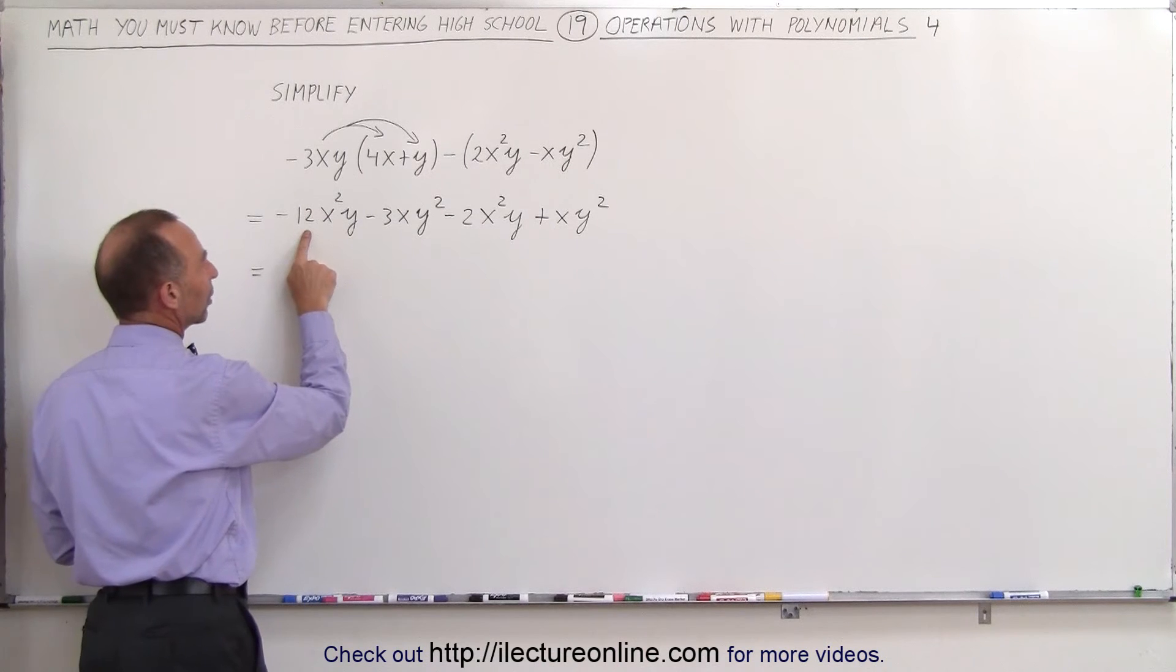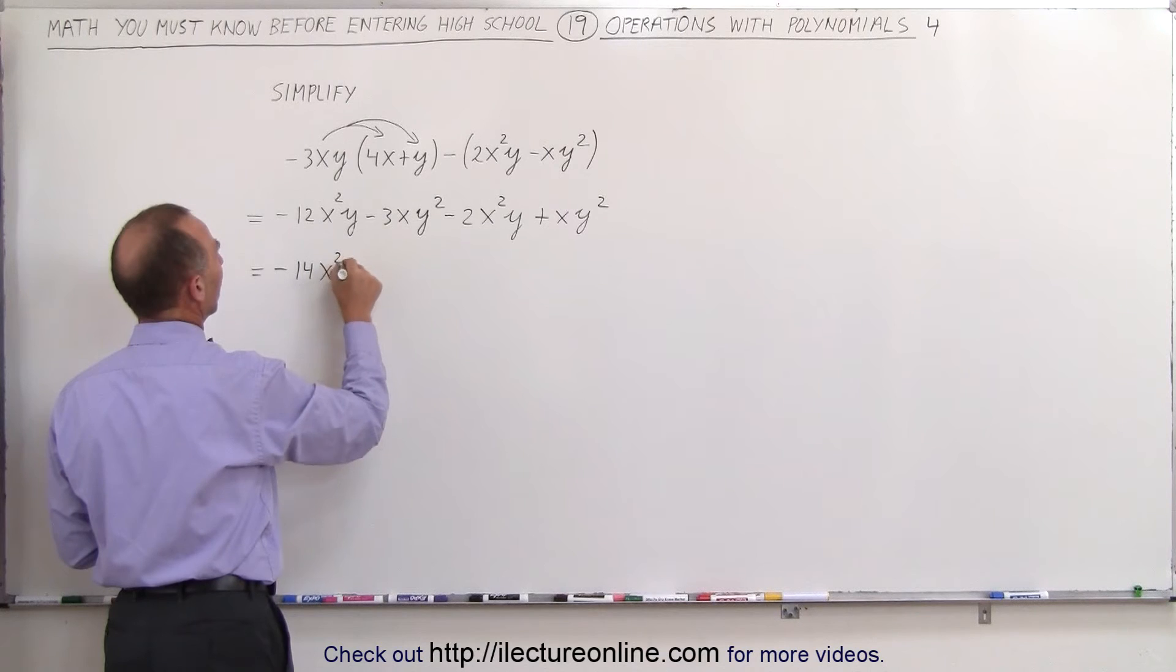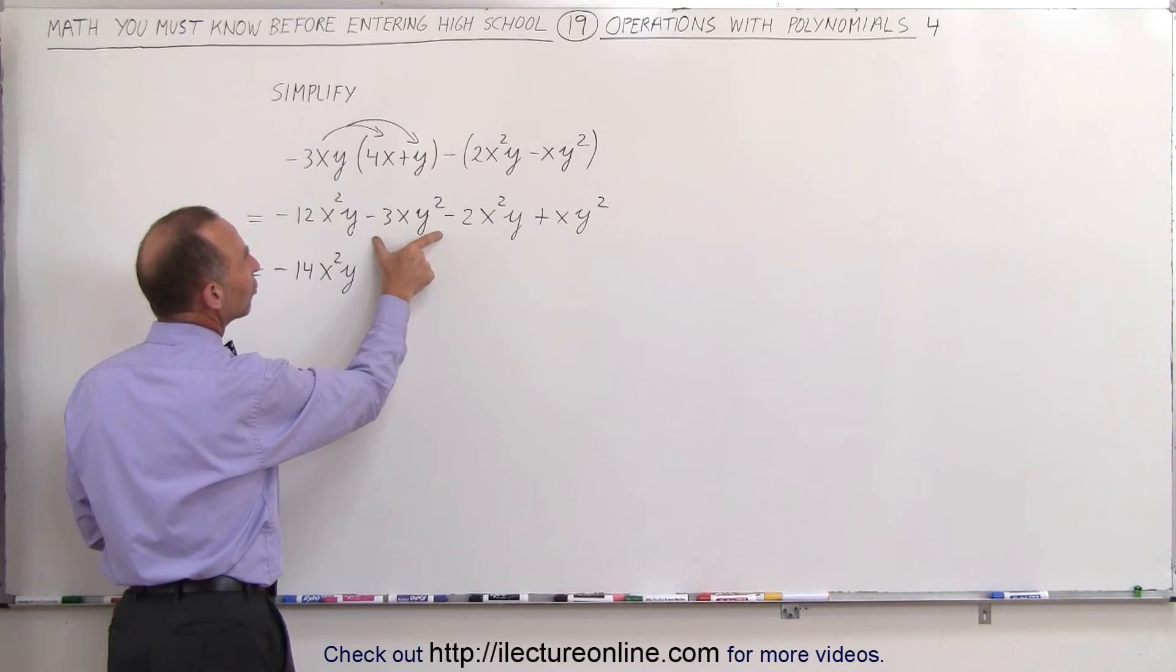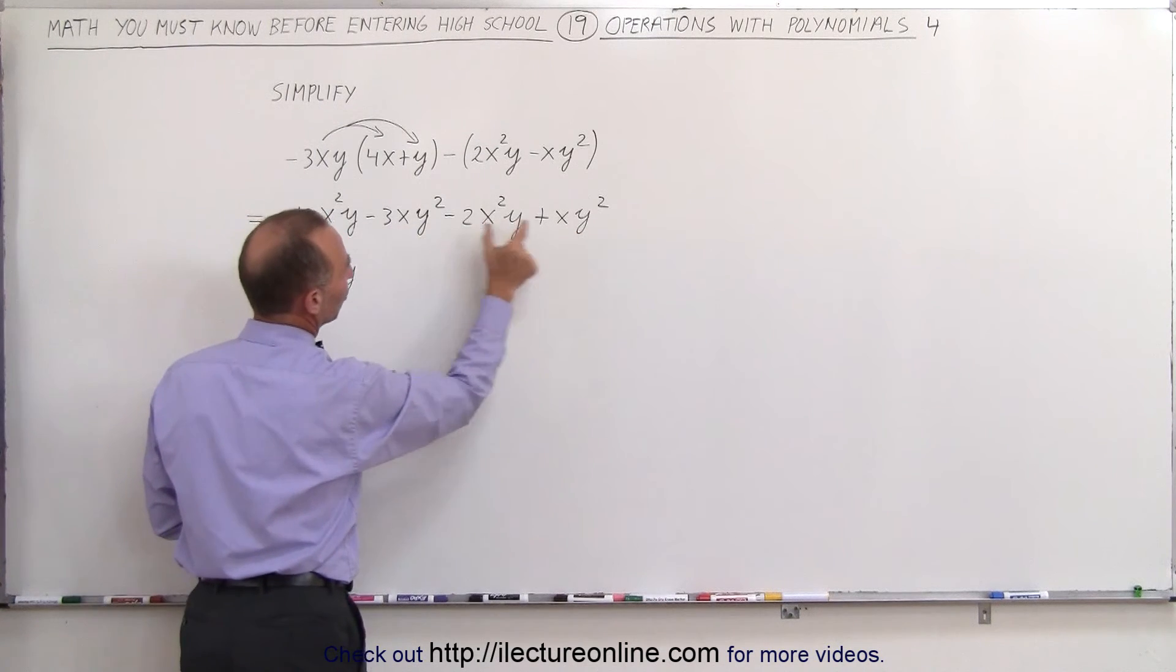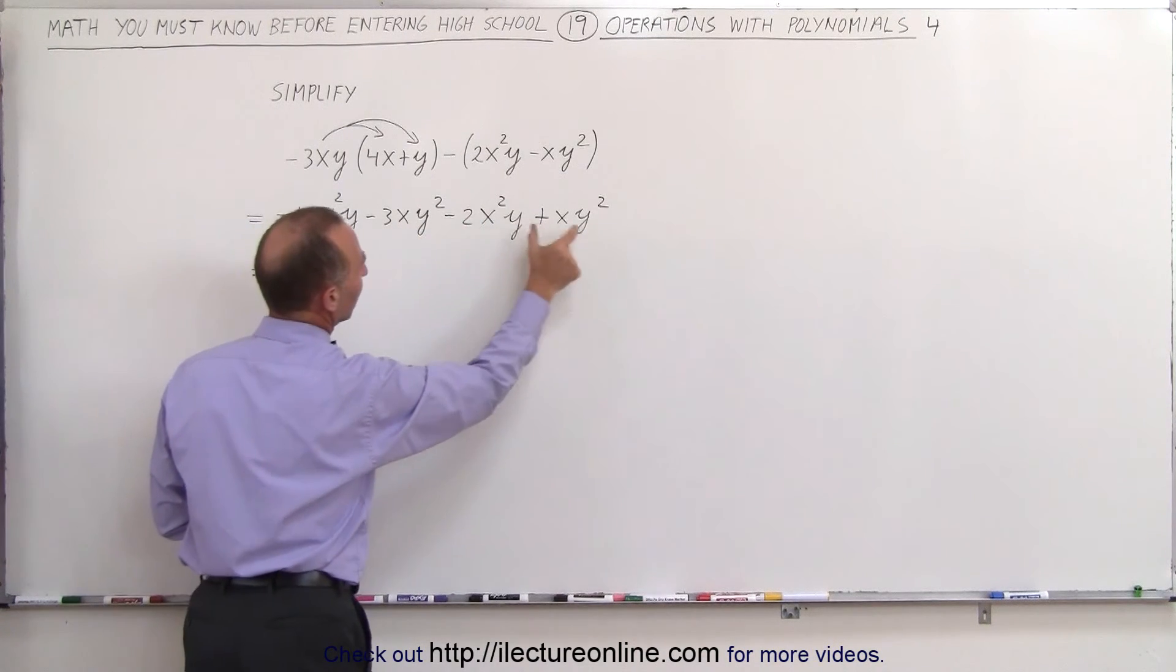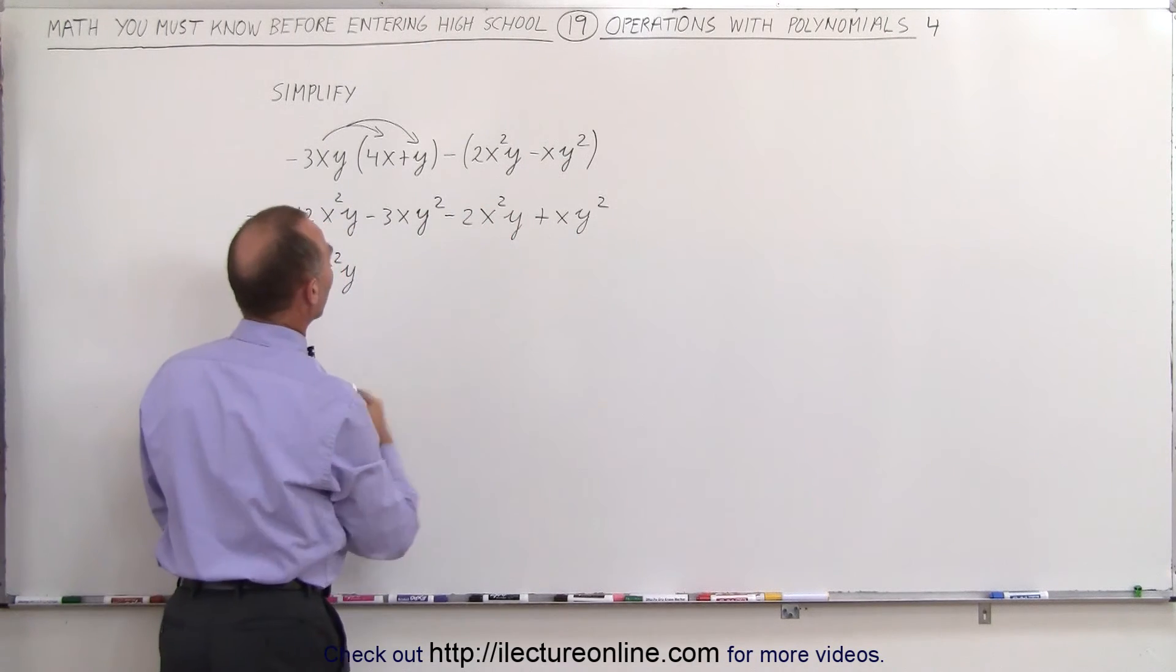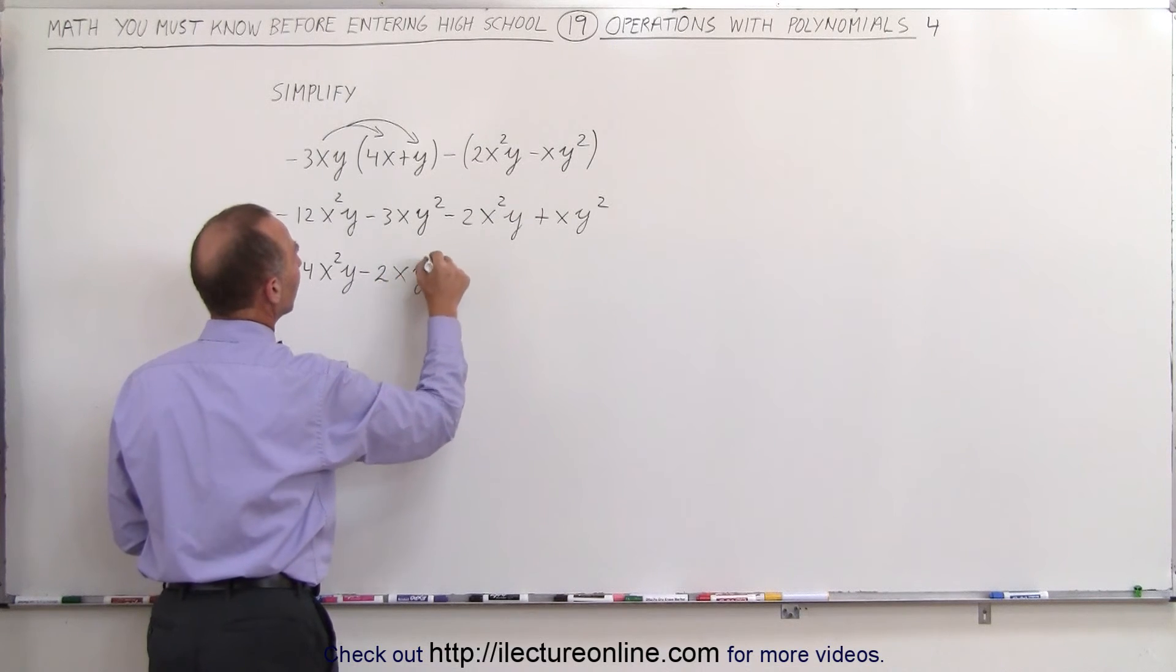Minus 12x squared y minus 2x squared y is minus 14x squared y. Now we have a minus 3xy squared. And here's another term that has an xy squared. The letter portion is exactly the same, xy squared xy squared. So those two can be combined. Minus 3 plus 1 is a minus 2xy squared.